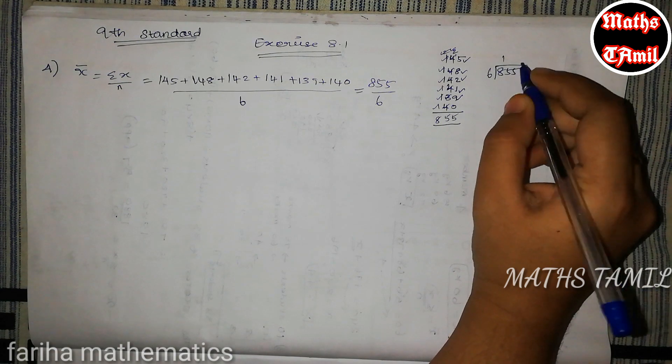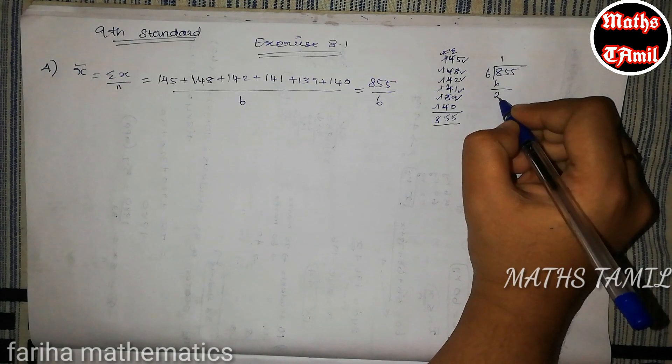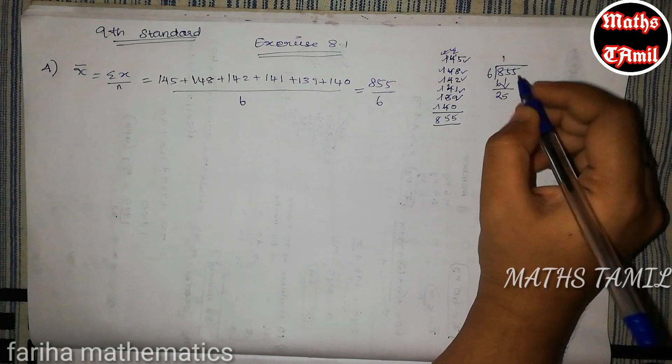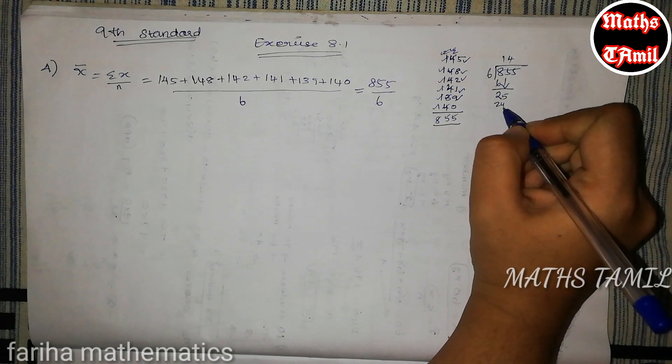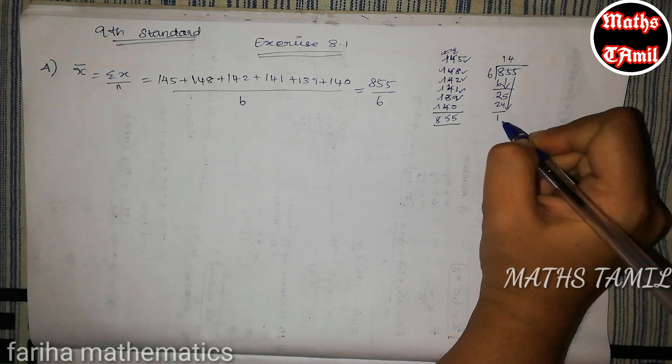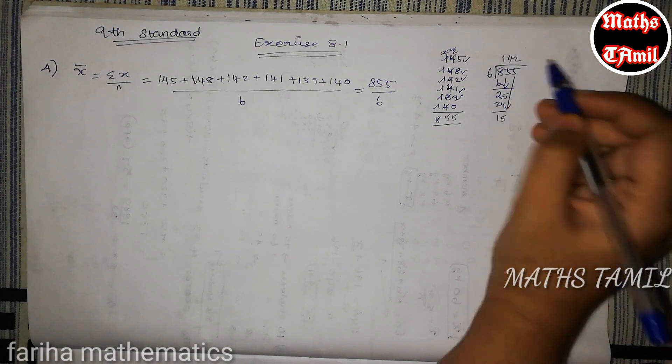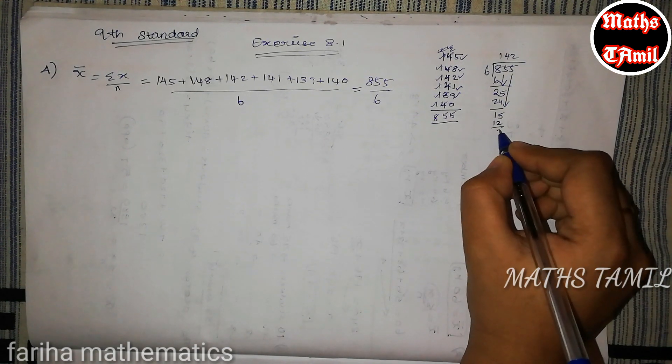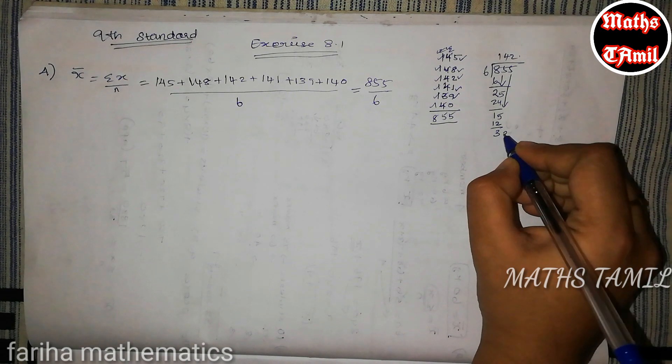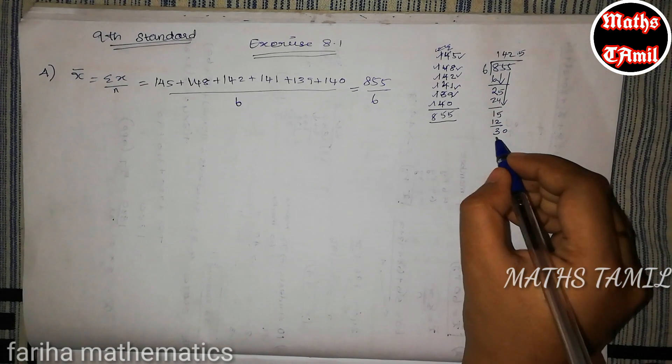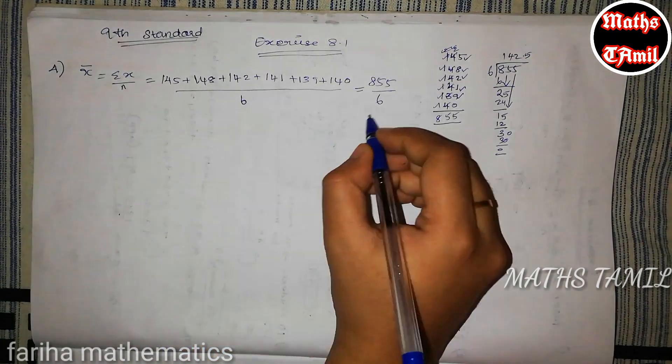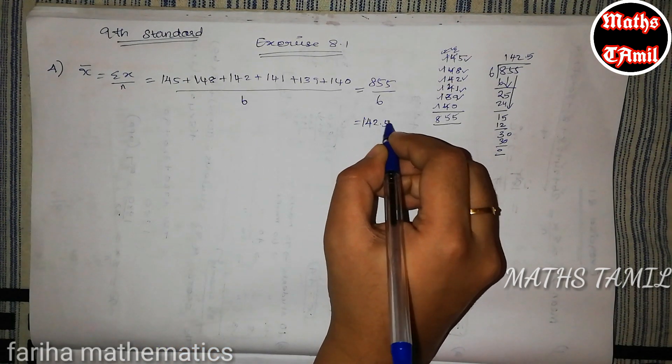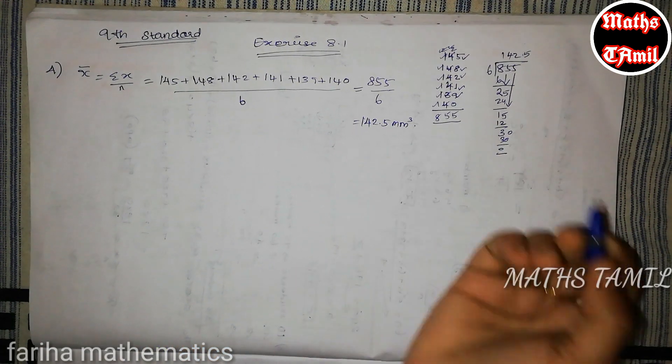So 1 times we get 6, balance 2. So we get 5. So 6, 12, 18, 24. 4 times we get 24, balance 1. So 5 is here. So 2 times we get 12, 3. Point is 0, so 5 times we get 30. So 142.5. Answer is 142.5 mm³. So it is the answer.